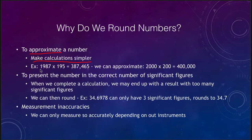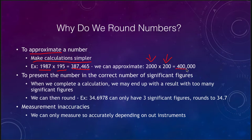For example, if we were to multiply 1,987 by 195, you could write it out and do long multiplication, or plug it into a calculator and find out the answer is 387,465. However, if you just need a quick approximation, we know that 1,987 is approximately 2,000 and 195 is approximately 200. We can multiply those together and find out that the answer is about 400,000, which is not all that far off from 387,465.